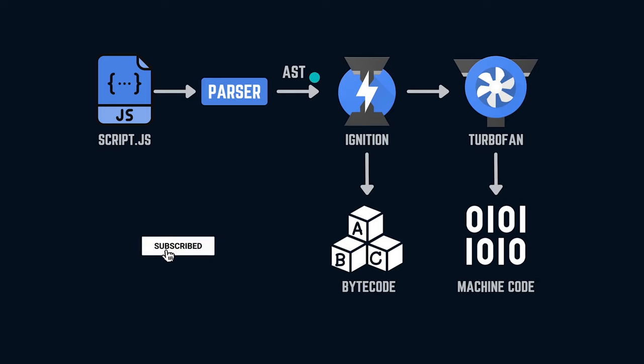After the parser produces the abstract syntax tree, the program goes through the ignition interpreter and turbofan. This is where the important task of the engine happens — translating the program into lower-level, machine-readable format, and where JavaScript engine manufacturers implement their ideas to make the engine more efficient. In brief, the ignition interpreter converts the program to bytecode, and when necessary, that bytecode is converted to machine code by turbofan.